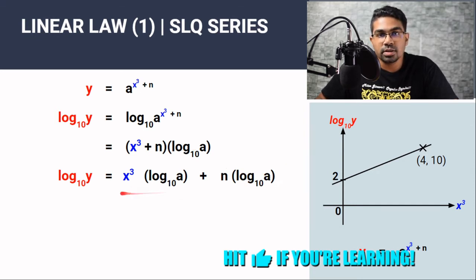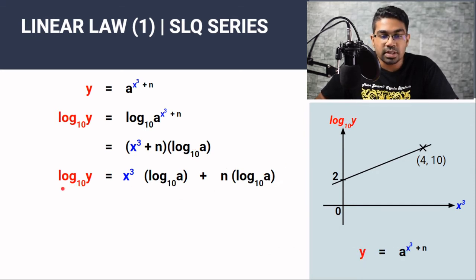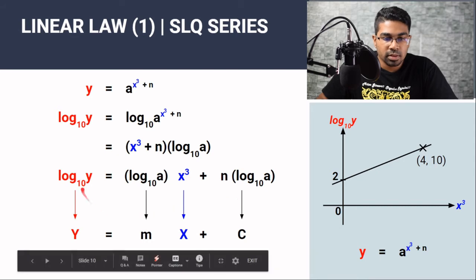Now at this stage, you should be able to see the pattern. We can already form our linear relation here. Remember the slope intercept form y equals mx plus c. We already have our capital Y and our capital X based on the graph. So if we just rearrange this, we bring this over here. Now I hope you can see it.